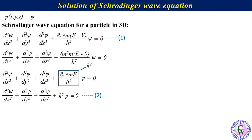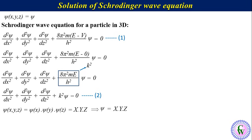Equation 2 has 3 variables, so it is difficult to solve directly. Therefore it is better to separate the variables. To do so, assume that the wave function psi(x,y,z) is the product of three individual wave functions: psi_x, psi_y and psi_z. For simplicity, if we represent psi_x, psi_y and psi_z by capital letters X, Y and Z, then we can write psi equals X times Y times Z. Label it as equation number 3.